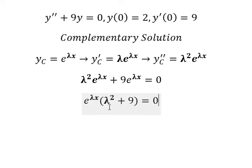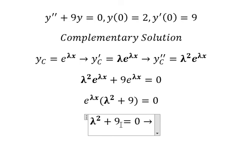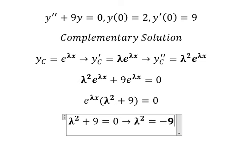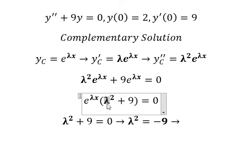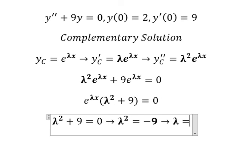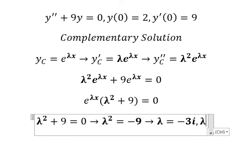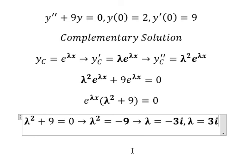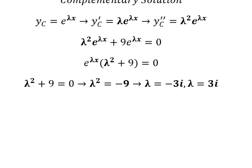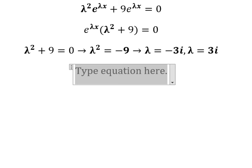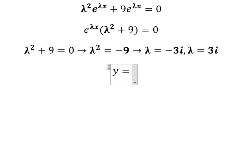Now we need to find the solution. We move number nine to the right side, and we get lambda equals to negative three i, where i is the imaginary unit, and lambda equals to three i. So we have two solutions.